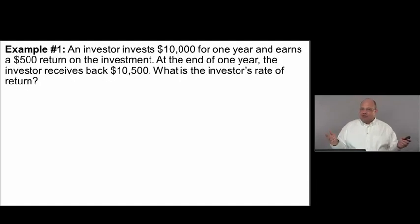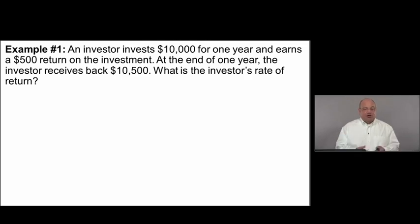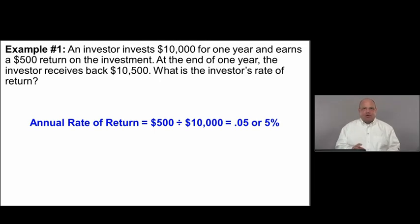In our first example, an investor invests $10,000 for one year and earns a $500 return. At the end of one year, the investor receives back $10,500. The annual rate of return is $500 divided by $10,000 — which is 5%. This is the basic straightforward situation.